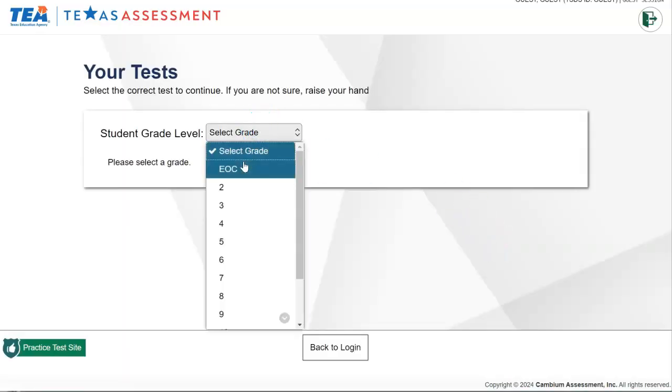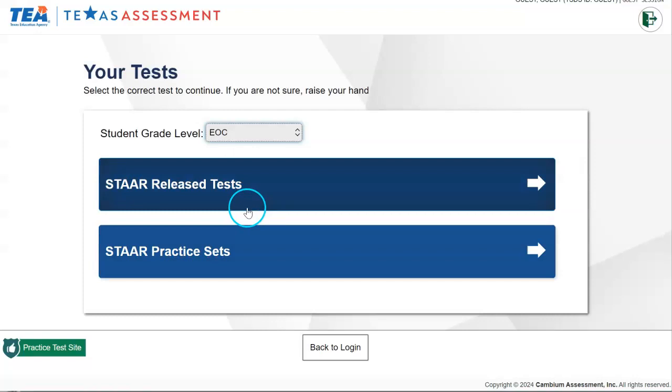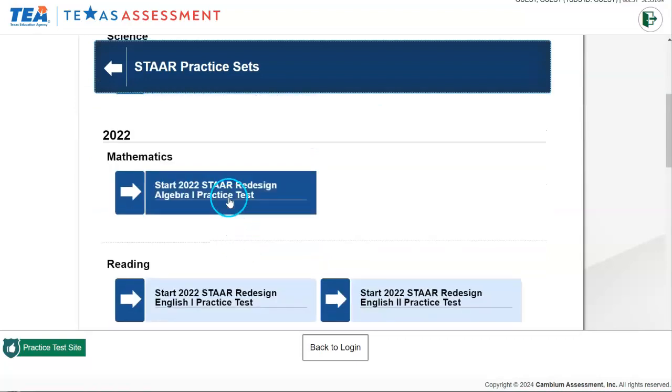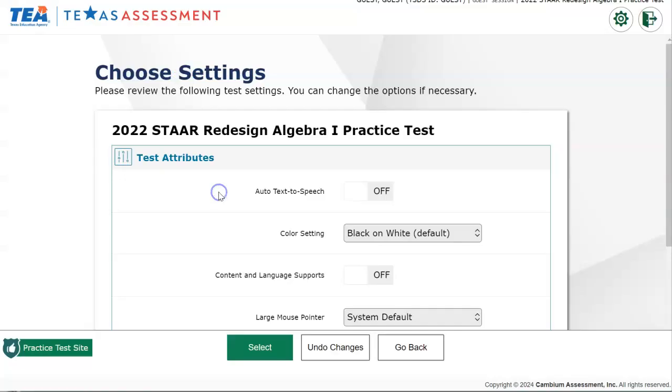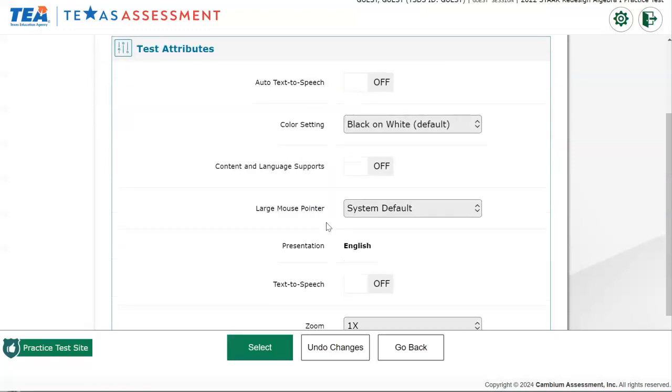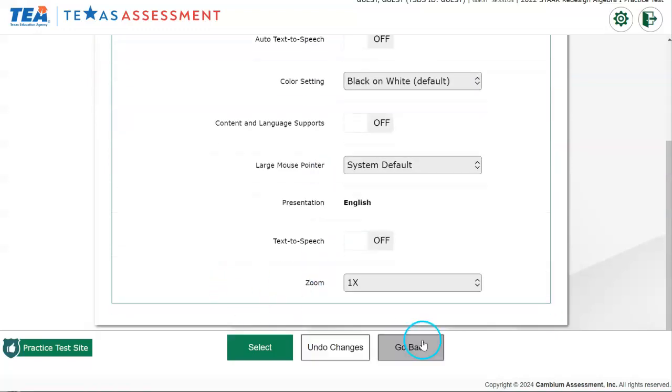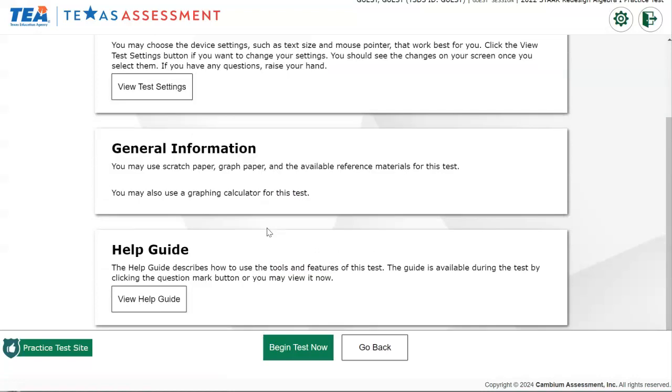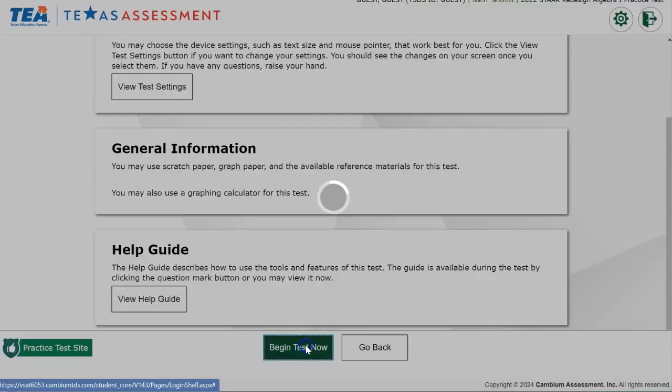The grade level you choose is EOC. And then you're going to go to the bottom one where it says Star Practice Sets. You're going to scroll down to the Redesign Algebra 1 Practice Test. For this page, the test attributes, I didn't change anything here, so I just clicked select. You can explore that if you'd like. And then for these settings and general information, we're going to skip all that and click on Begin Test Now.